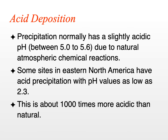Some locations in eastern North America had precipitation that was far more acidic than that. In fact, some places in eastern North America had precipitation with pH values as low as 2.3. This also occurs in Europe and in Asia — extremely acidic precipitation events. With a pH of 2.3, this is about 1,000 times more acidic than natural precipitation.